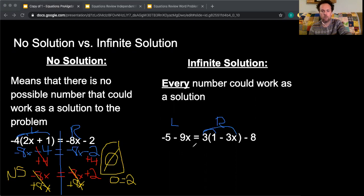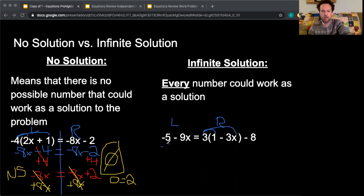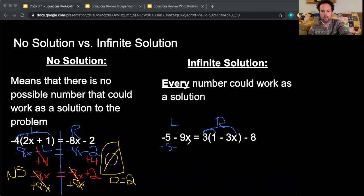So I'm just going to go ahead and bring down my -5 - 9x equals. And then 3 times a positive 1 gives me a 3. 3 times a -3x gives me -9x minus 8. So those of you that are watching this video, my cat just fell off.